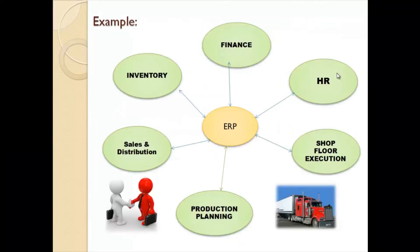This is how ERP works for any company. An ERP system automates and integrates core business processes such as taking customer orders, scheduling operations, and keeping inventory records and financial data. ERP systems can drive huge improvements in the effectiveness of any organization by helping define your business processes, ensuring they are combined throughout all the supply chain, and protecting your critical business data through well-defined roles and security access.